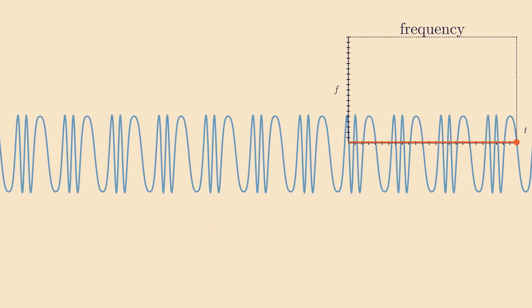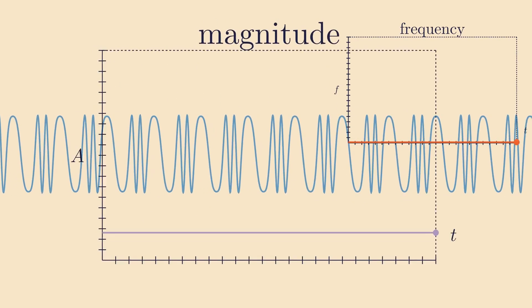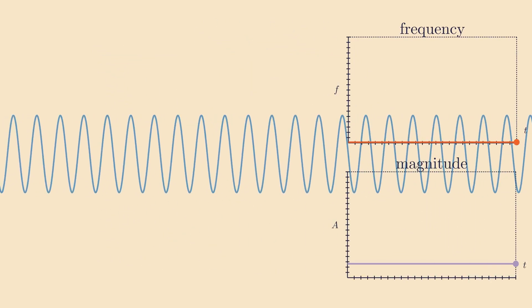Vibrato has two key components: frequency, how fast it wiggles, and magnitude, how much the pitch changes. We'll now listen to a note that starts with no vibrato but slowly adds vibrato back. Listen carefully, something very interesting happens.